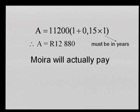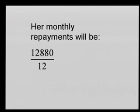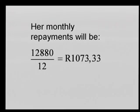Moira's total cost is the deposit plus R12,880: R2,800 + R12,880 = R15,680. That is a lot of money. Her monthly repayments are calculated on the R12,880 — excluding the deposit, which has already been paid — giving R12,880 ÷ 12 = R1,073.33 per month.